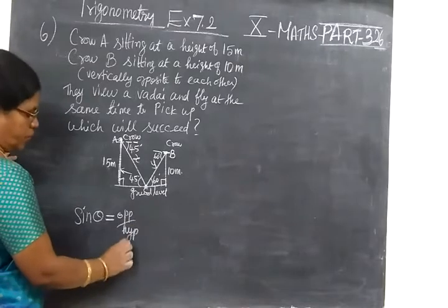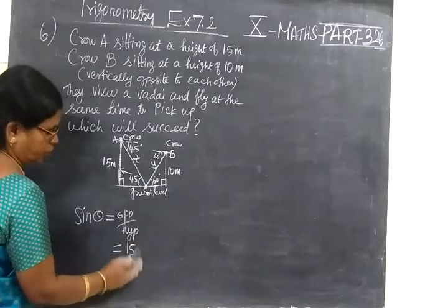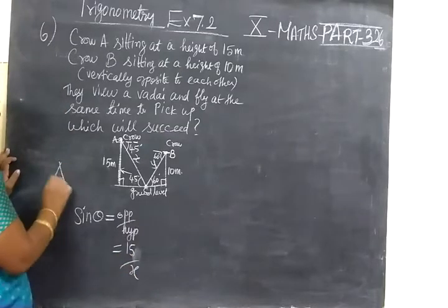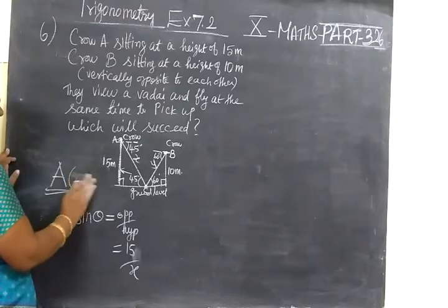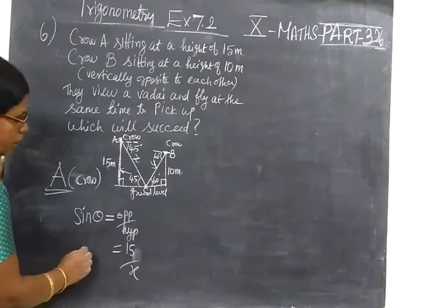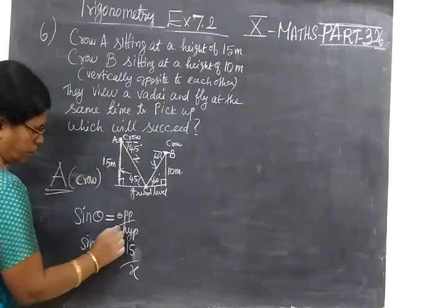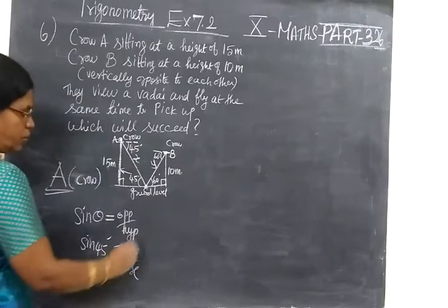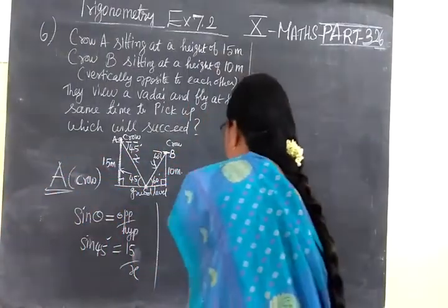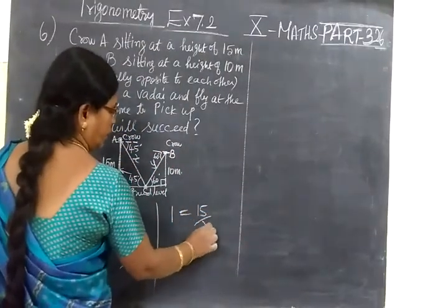Opposite is 15 meters. Then hypotenuse, that we don't know. We treat it as S for Crow A. Now the angle is sin 45 degrees. Sin 45 is 1 by root 2, so 1 by root 2 equals 15 by S. Cross multiply.